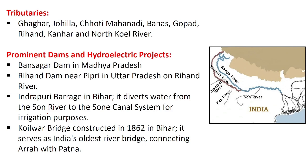Prominent dams and hydroelectric projects on the Sone River: Banasagar Dam is in Madhya Pradesh. Rihand Dam is in Pipri, Uttar Pradesh, on the Rihand River. Indrapuri Barrage is in Bihar, which diverts water from the Sone River to the Sone Canal system for irrigation purposes. The Koilwar Bridge was constructed in 1862 in Bihar and is served as India's oldest river bridge, connecting Arrah with Patna.